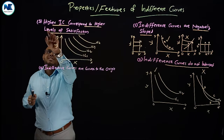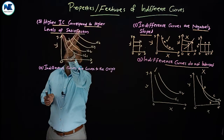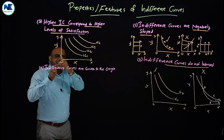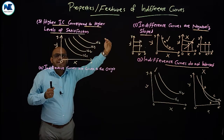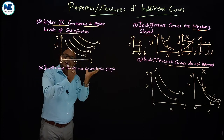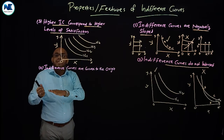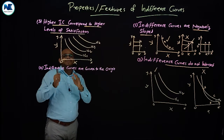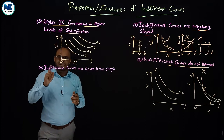Higher indifference curves correspond to higher levels of satisfaction. Moving right and upward in the indifference map corresponds to higher satisfaction, while lower indifference curves correspond to lower levels of utility or satisfaction provided to the consumer.